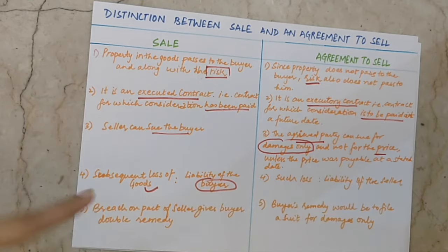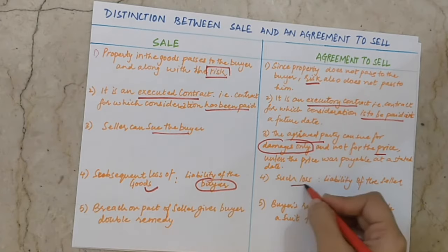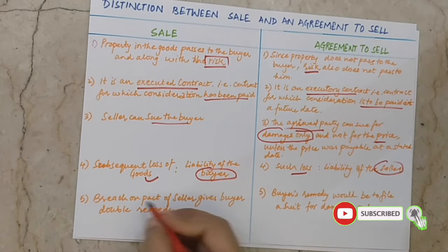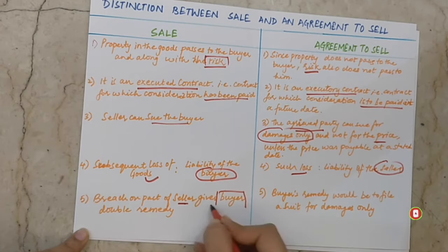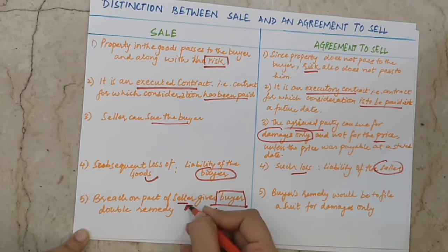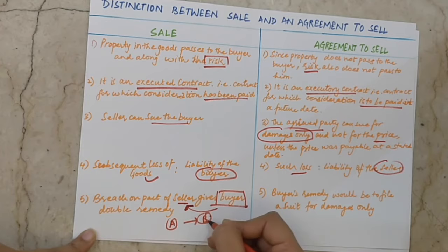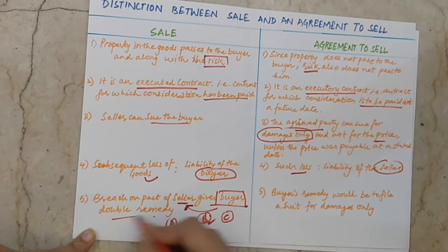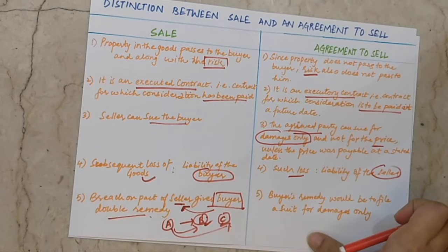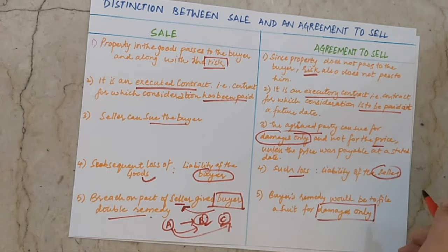अगर goods का loss होता है तो liability buyer की होगी, क्योंकि ownership और risk seller से buyer को transfer हो चुकी होती है। अगर agreement to sell में breach on the part of seller होता है, तो buyer को double remedy मिल जाती है — वो seller से damages ले सकता है और उस party से भी जिसे वो goods sell किये गए हों। जैसे A ने B से goods लिये, लेकिन वो goods actually C के थे, तो A के पास B से और C से दोनों से remedy है। Agreement to sell में buyer की remedy सिर्फ damages तक सीमित होती है, क्योंकि ownership और risk transfer नहीं हुई होती।